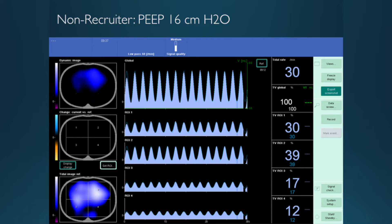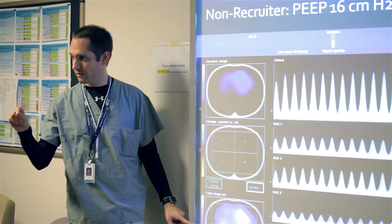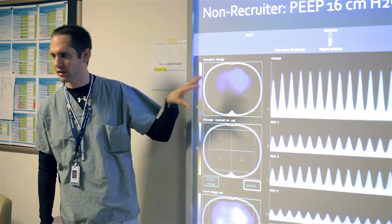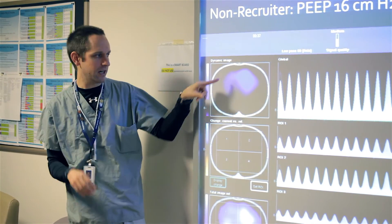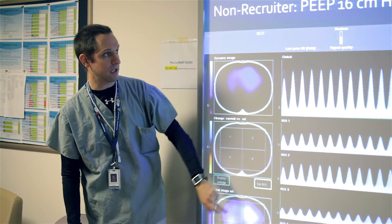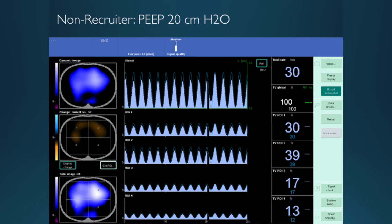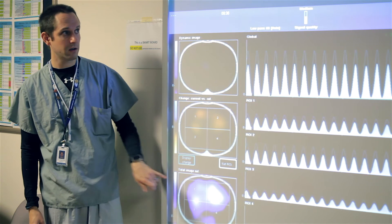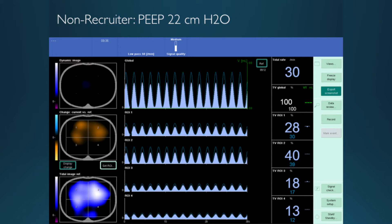This is an example of a PEEP at 16. This is a different use of that other screen. This is my reference shot before I do a maneuver. This is right now. When I capture a screenshot, this is showing the difference between right now and my reference. PEEP of 16. This is an example of a non-recruiter. We go up to 20, nothing. We go up to 22, a whole lot of over-distention, nothing popping open. That's an example of us going up and nothing happening.